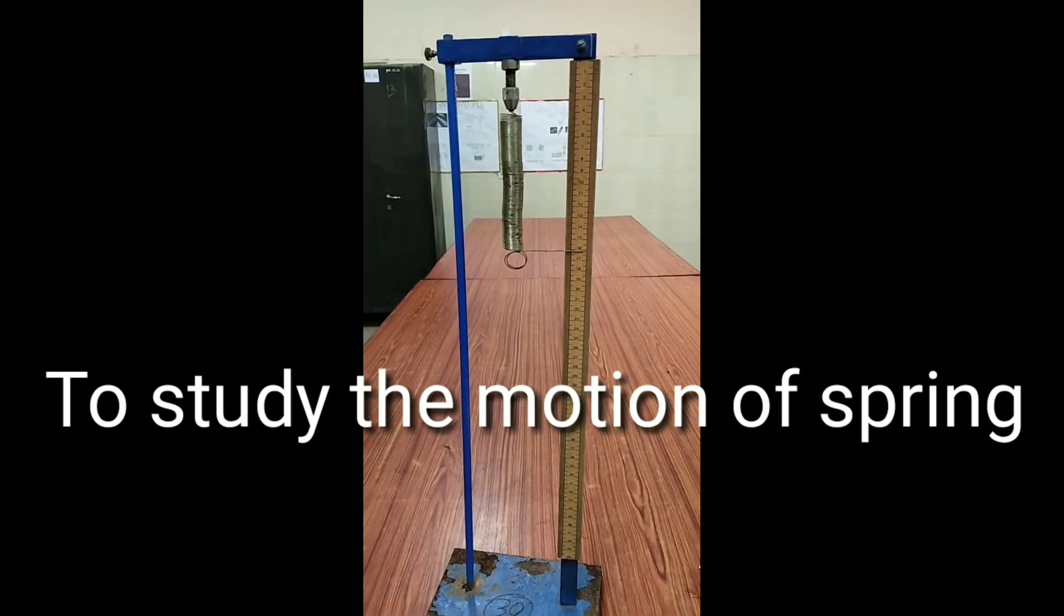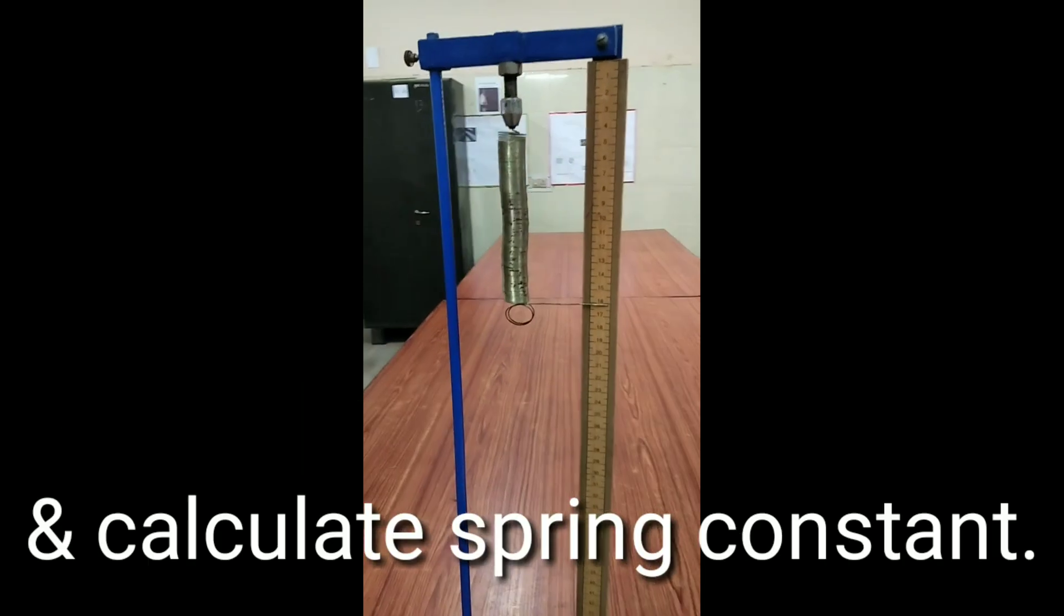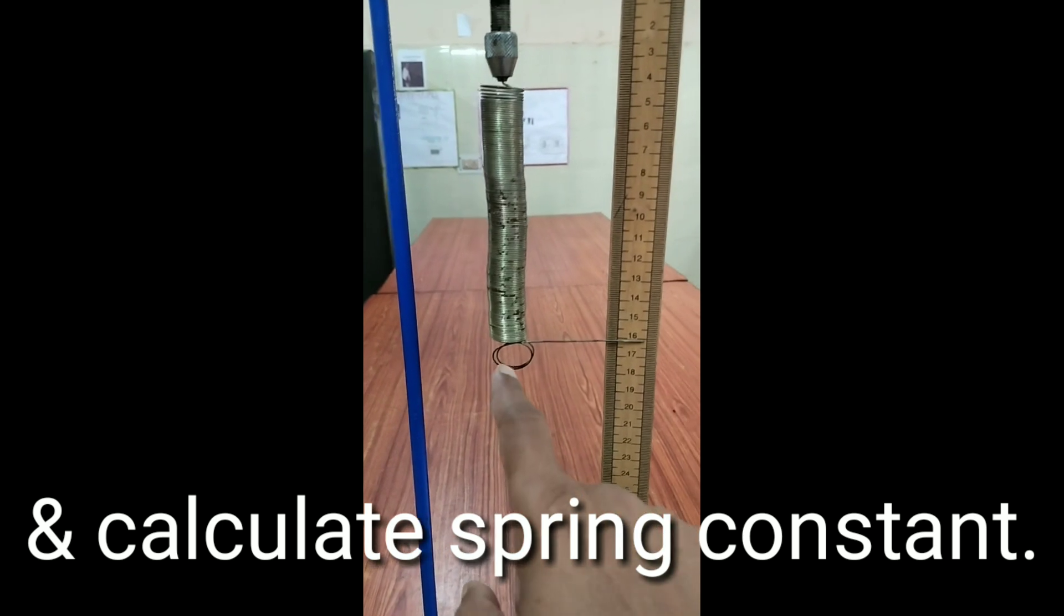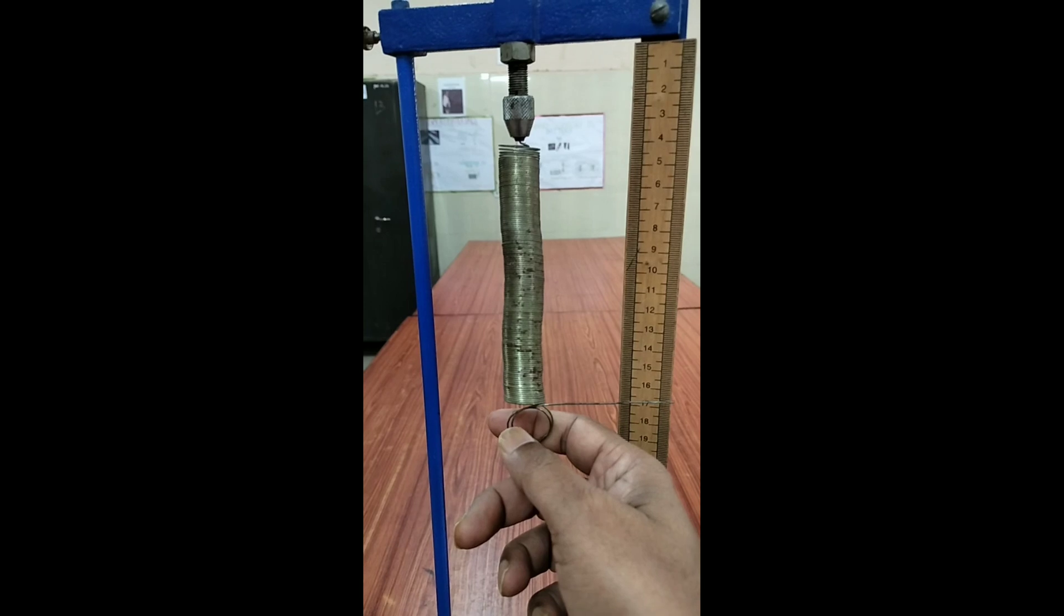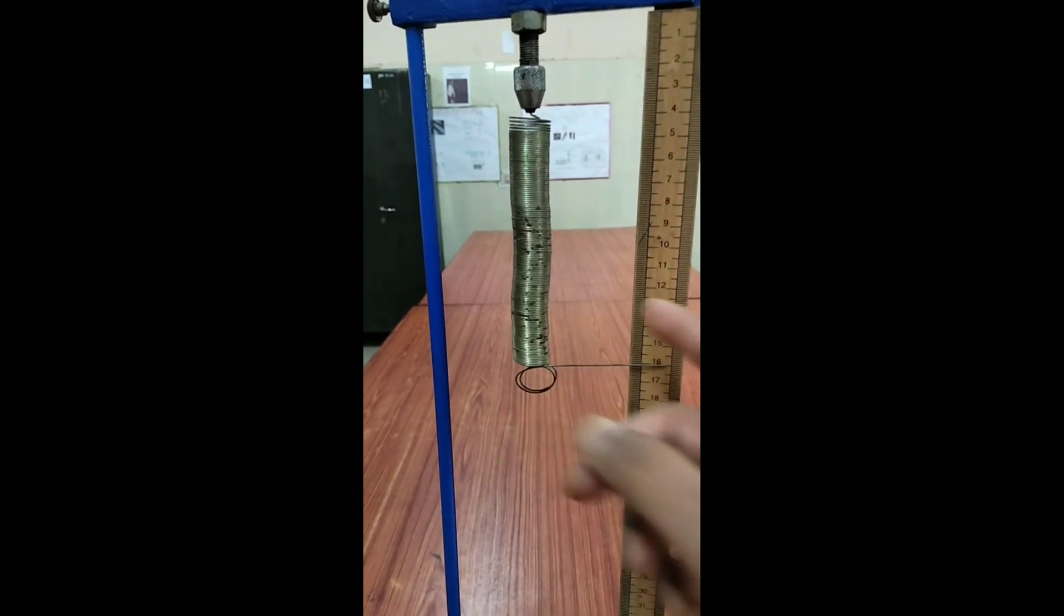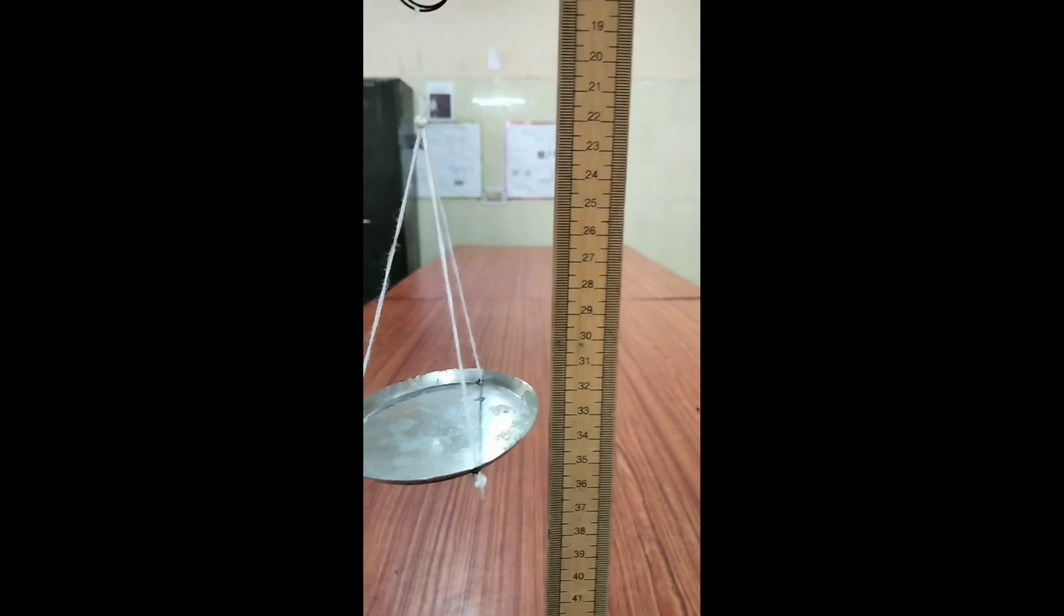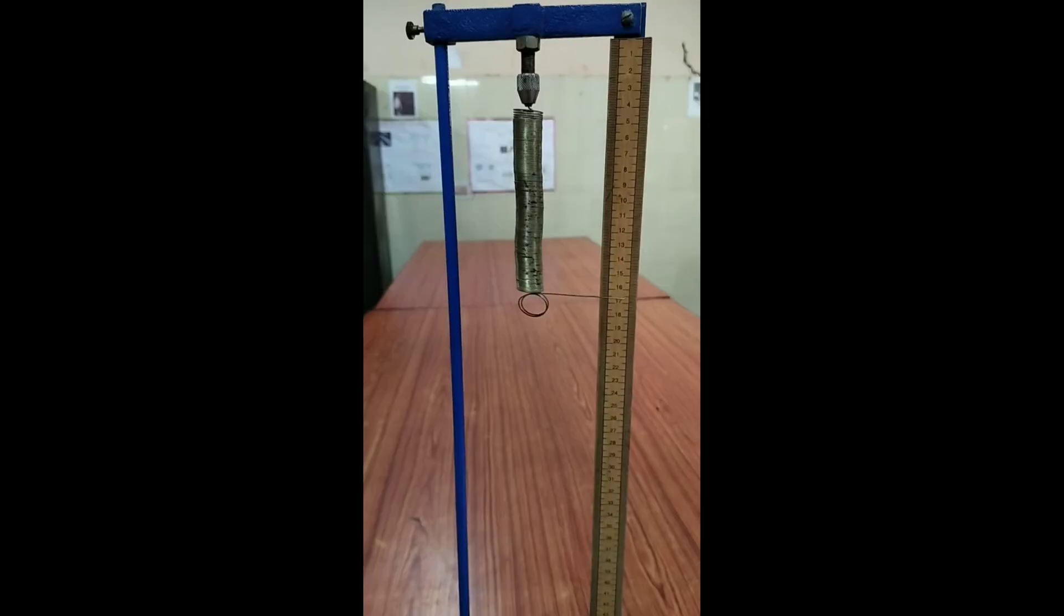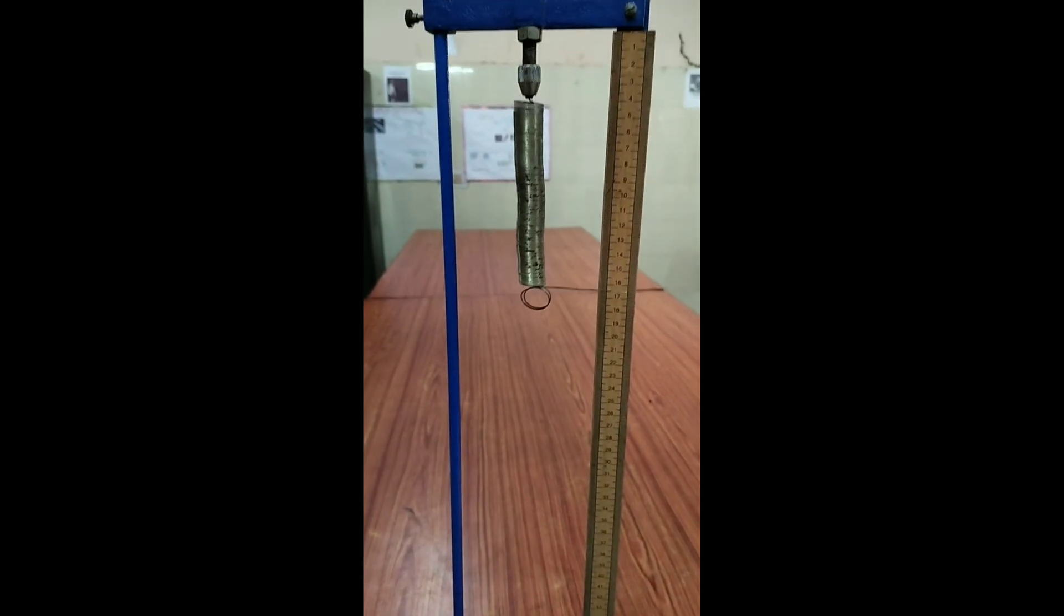In this experiment we will study the spring constant of a helical spring from its load extension graph. Apparatus required: helical spring with a pointer attached at its lower end, a hanger or weight pan to supply load to the spring, slotted mass or weight box, and clamp stand fitted with meter scale and telescope to see the reading.